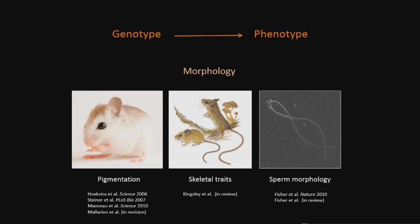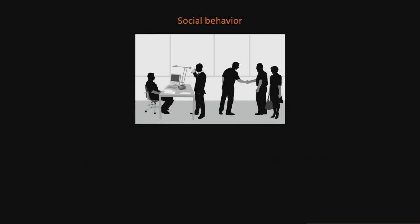While we have a growing number of examples of connections between genotype and phenotype for morphological characters, we have many fewer involved in behavioral differences. Arguably one of the most interesting behaviors, at least to me, is social behavior. Social behavior is clearly a hallmark of human biology, and dysfunction in social behaviors can have dramatic effects on human health and society more generally. But we know very little about the genetic basis of differences — both among individuals and between species — in social behavior.